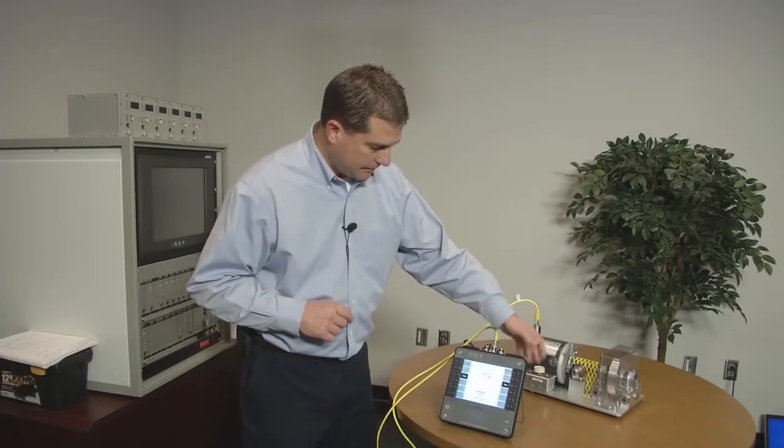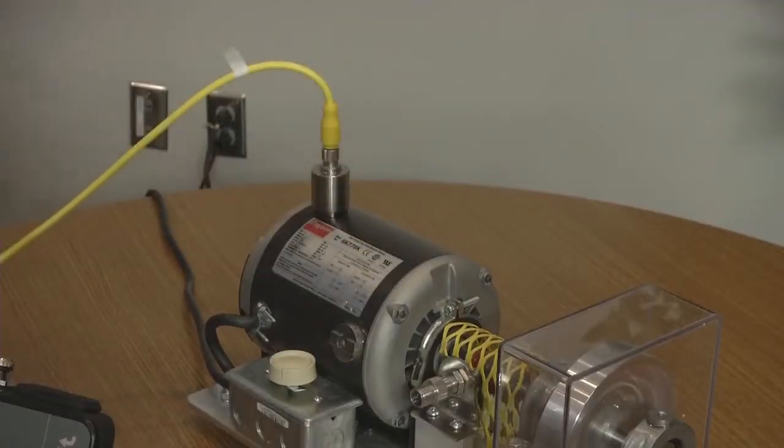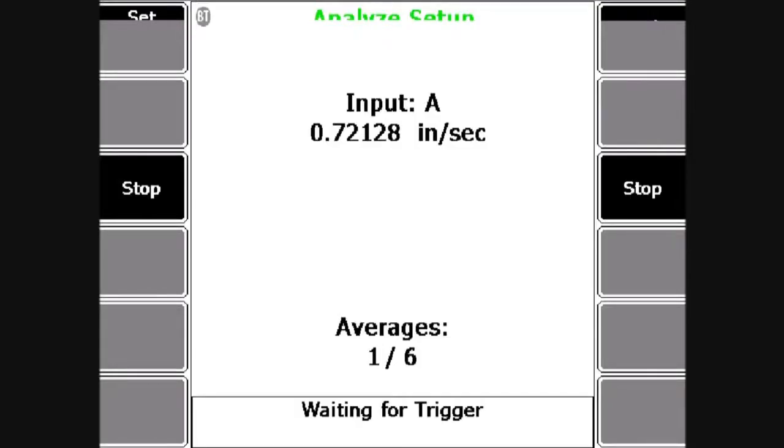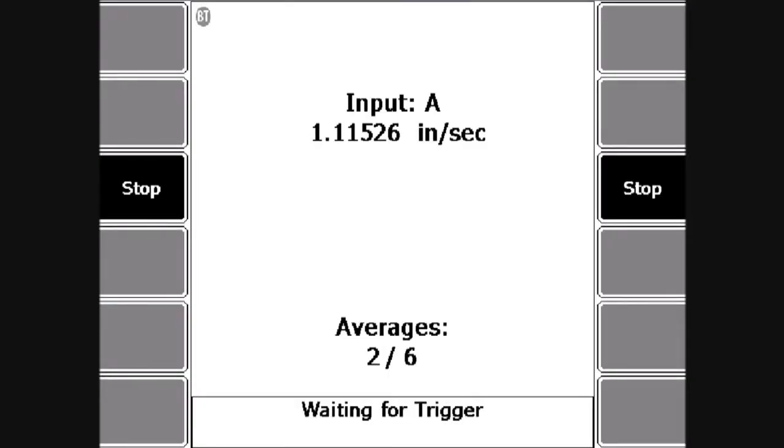So I'm going to press enter. It says waiting for the trigger. It got the trigger. Second average. Third average. Fourth average. Fifth. Sixth.